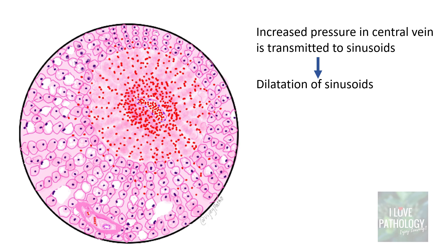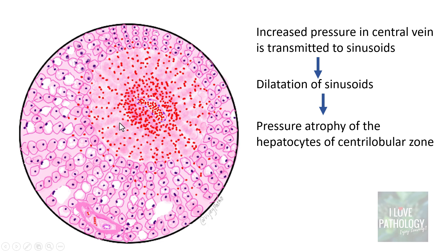Let's understand this by this simple illustration. This is your central vein. Whenever there is congestion, whenever there is increased pressure in this central vein, obviously the pressure is transmitted into the hepatic sinusoids and there will be dilatation of hepatic sinusoids.